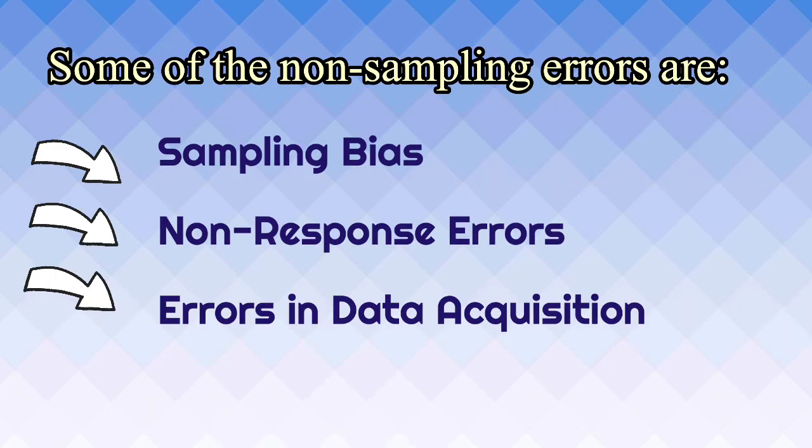Some of the non-sampling errors are sampling bias, non-response errors, and errors in data execution. Sampling bias occurs when the sampling plan is such that some members of the target population could not possibly be included in the sample. Non-response occurs if an interviewer is unable to contact a person listed in the sample or a person from the sample refuses to respond — in that case, the sample observation may not be representative. Errors from data execution refers to those errors which arise from recording of incorrect responses.